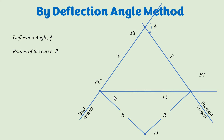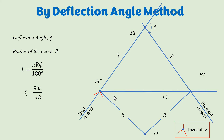Now let's discuss how deflection angles are calculated and used in setting out the simple circular curve. Deflection angles are horizontal angles, and to measure them we use a theodolite, which we place at the PC point. The formula for the deflection angle is 90·l / (π·R), where l is the peg interval and R is the radius of the curve. The length of the curve is given by π·R·∆ / 180, which involves the radius and the deflection angle.